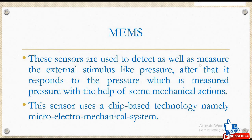MEMS sensors are used to detect changes such as pressure. If you apply pressure, or if you change the acceleration, or if any variation is there — for example, an accelerometer is one such example — it measures the change and converts that mechanical action into electrical and electronic signals.